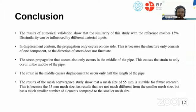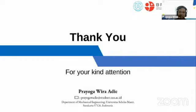Conclusion: The result of the numerical validation shows that the similarity of this study with the reference reaches 15%. Dissimilarity can be influenced by different material inputs. In displacement contour, the propagation only occurs on one side. This is because the structure only consists of one component, so the direction of the stress does not fluctuate. The results of the mesh convergence study show that a mesh size of 55 millimeters is suitable for future research. This is because the 55 millimeter mesh size has results that are not much different from the smaller size, but has a much smaller number of elements compared to the smaller size. That's all for me, thank you for your attention.